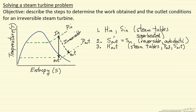Our next step is to calculate the work for the reversible process. The reversible work is going to be enthalpy out prime minus enthalpy in. This number is going to be less than zero because we're getting work out of the system — the work is negative for this system. So now we have the reversible work.